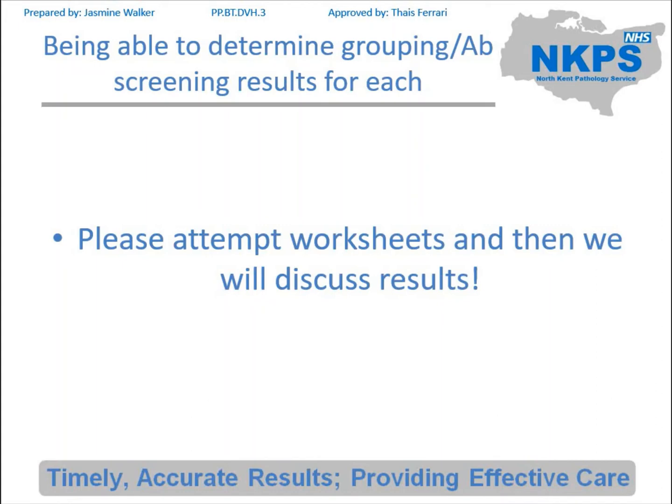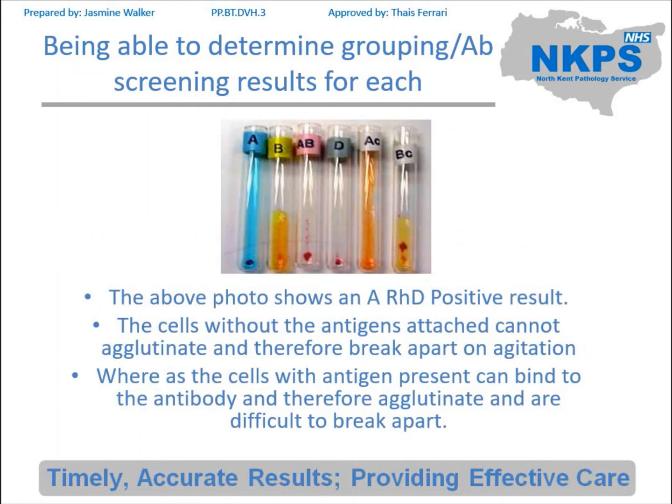Now we're going to go through the results and what they should be, starting with a tube group. This is the photo that you got in your worksheet. You can see that the A is strongly positive, the B is negative, the AB is positive but a bit more weakly, the D is positive, the A cells are negative, and the B cells are positive. So this is an A positive patient.